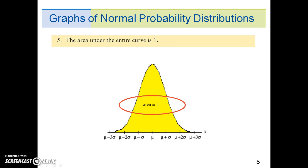Fifth, the area under the curve is 1. This is because all the probabilities within the distribution must sum to 1. This concept is further explained in the next slide using the empirical rule.